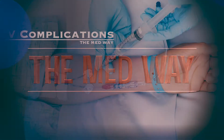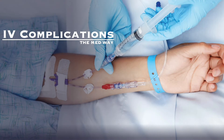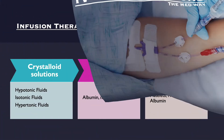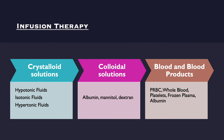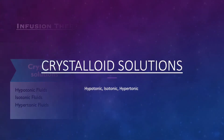Today we're going to be discussing IV fluids and IV complications. We'll cover three categories of infusions: crystalloid solutions, which consist of hypotonic, isotonic, and hypertonic solutions; colloidal solutions, which consist of albumin, mannitol, and dextran; and lastly blood and blood products, which includes packed red blood cells, whole blood, platelets, frozen plasma, and albumin.